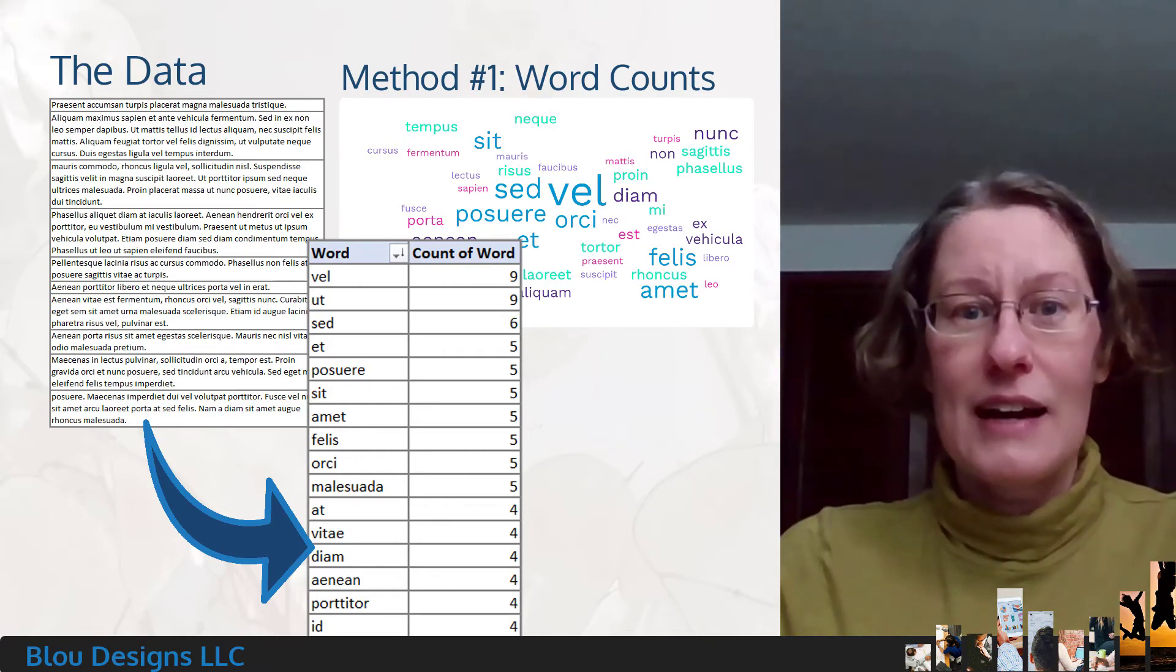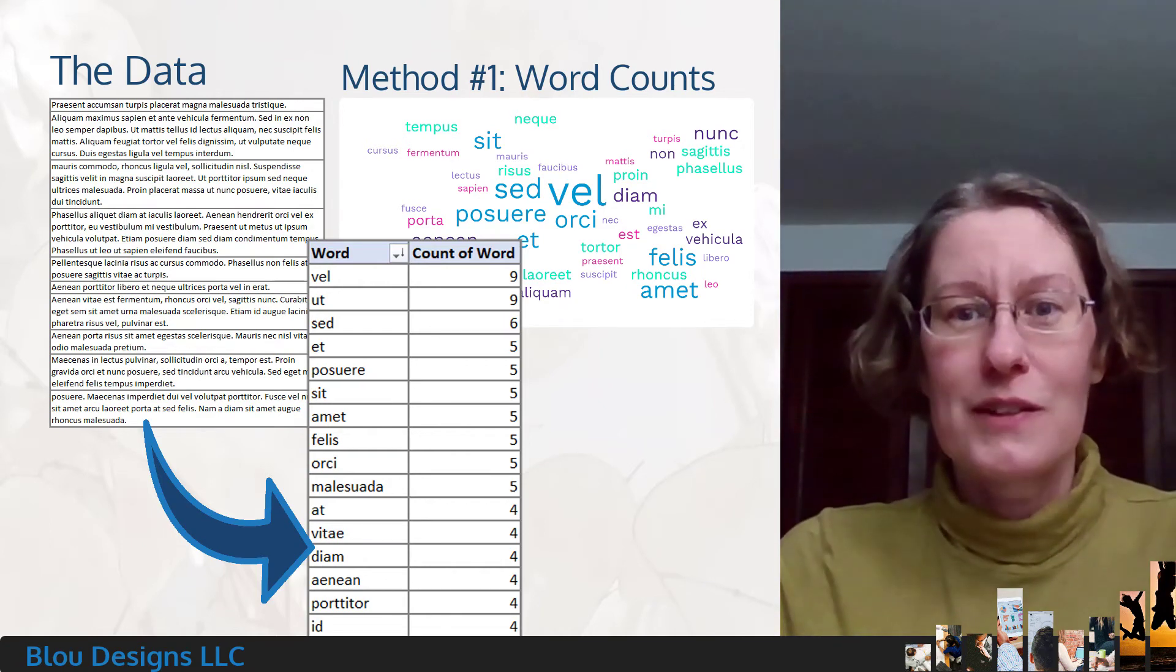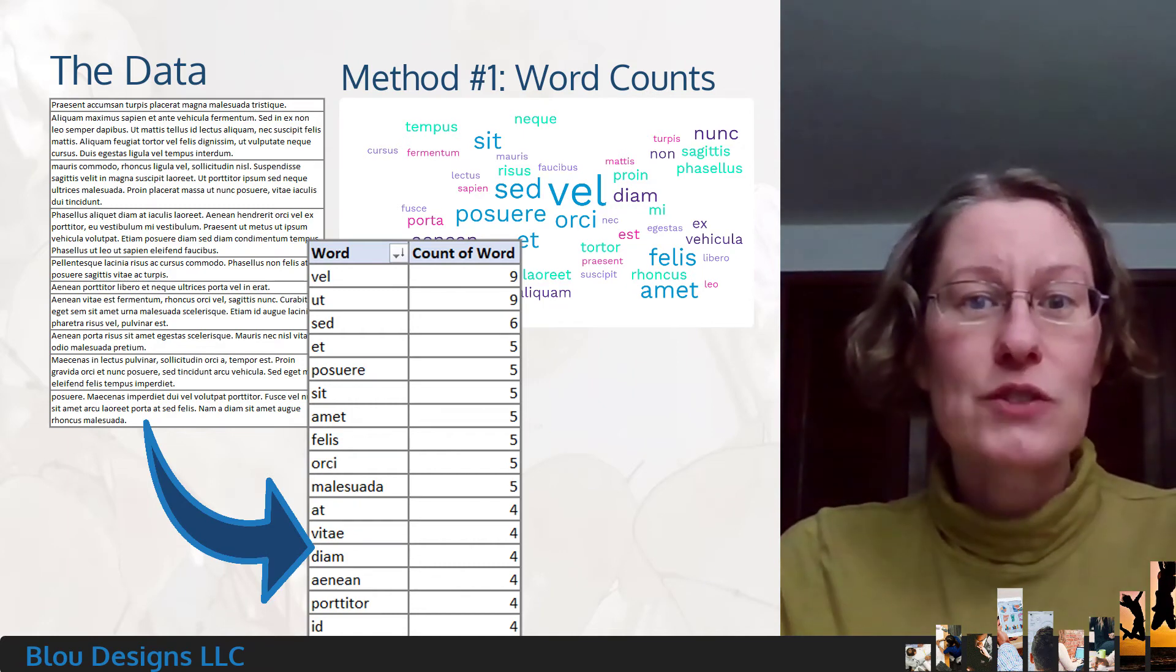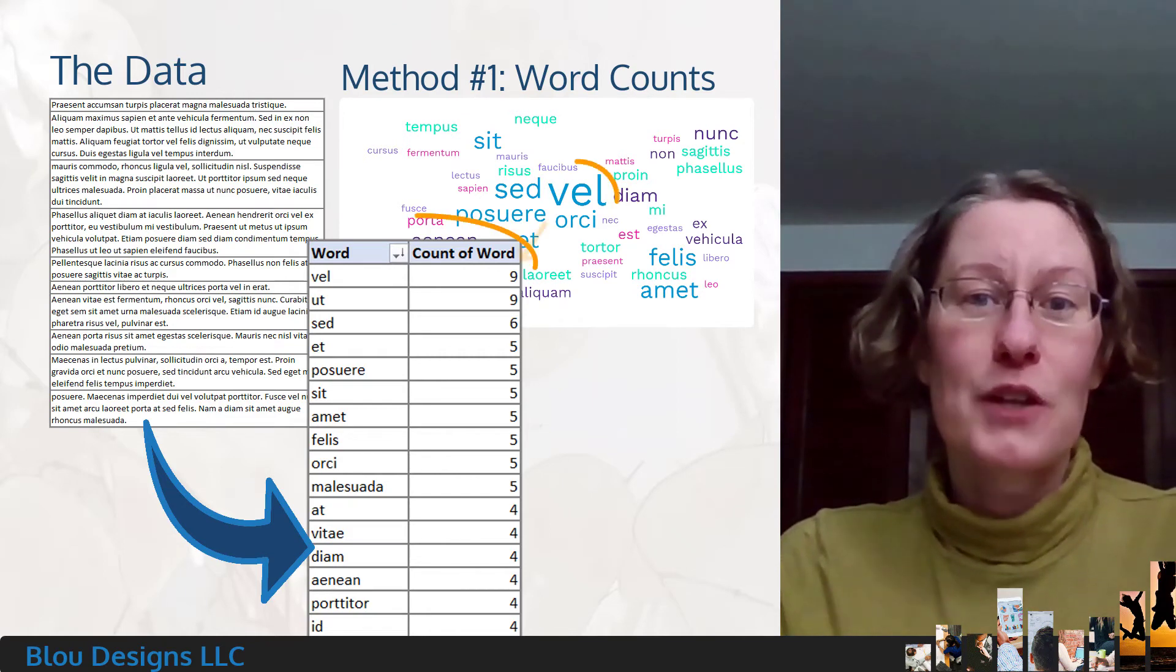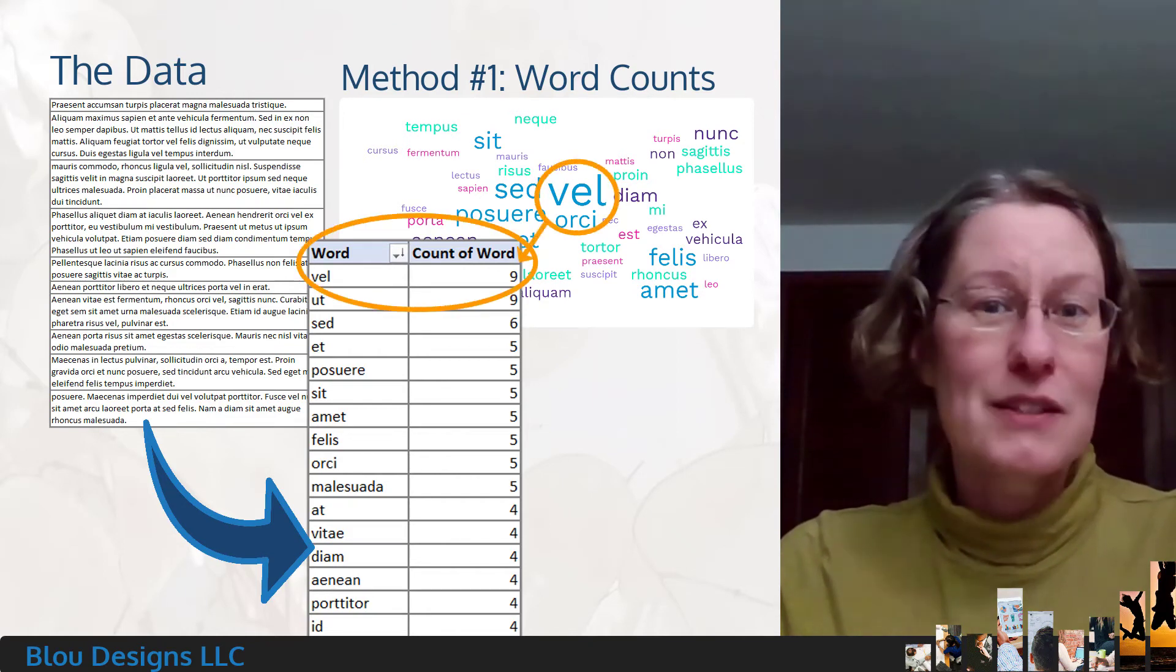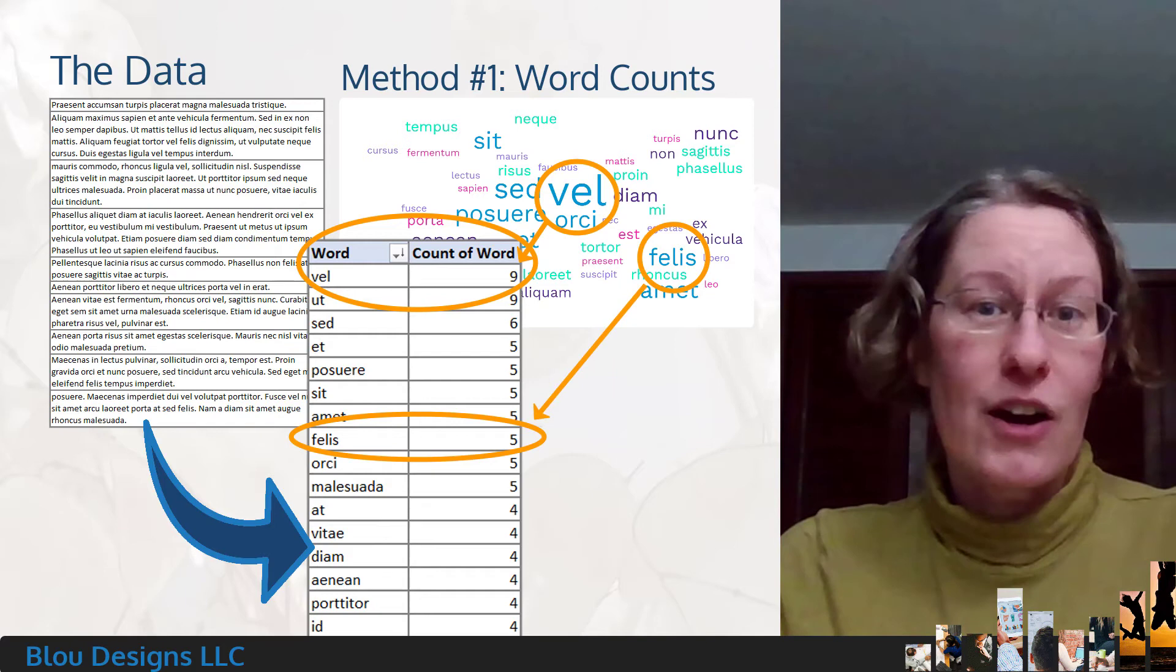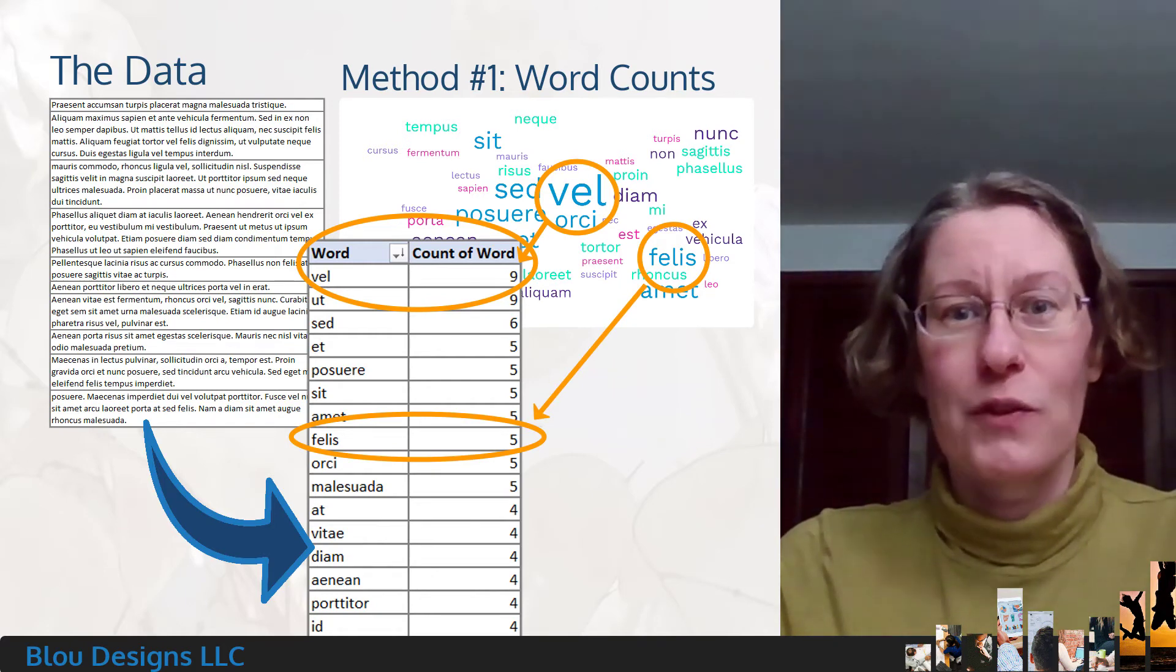that is, the nouns, adjectives, and adverbs. The final result, when displayed as a word cloud visualization, will change the size of the words based on how many times it appears in the responses. So bigger words are more common than smaller words.